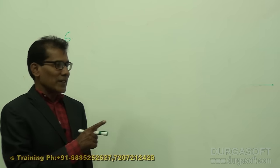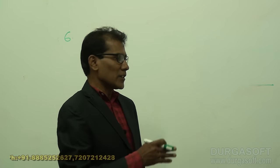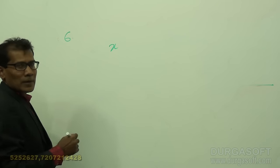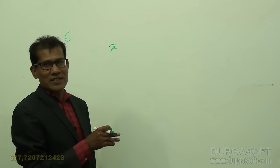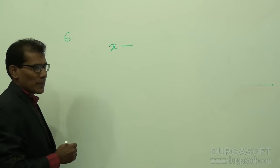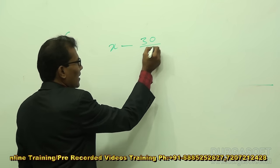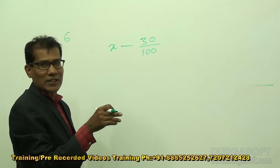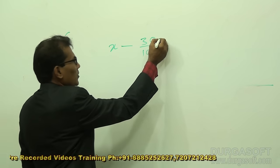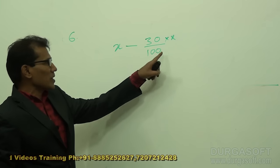To calculate this: x is reduced by 30 percent means something is subtracted from x. X is the original number. Reduced means decreased, so we subtract. X is reduced by 30 percent — but 30 percent of what? It is 30 percent of x only. So x reduced by 30 percent means x minus 30 percent of x.